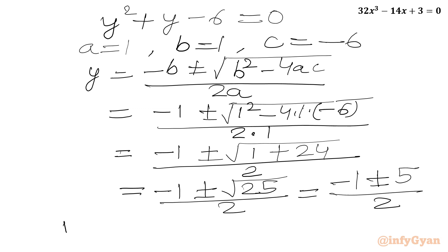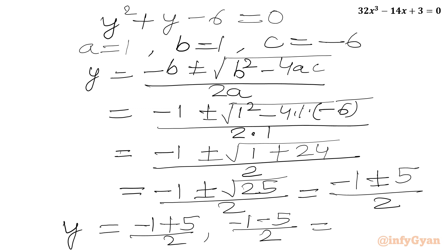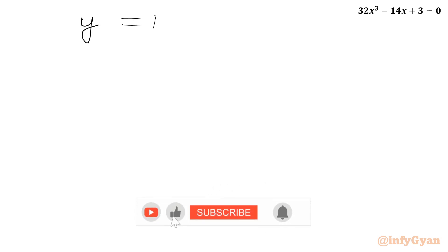Since √25 = 5, we get two values: (-1 + 5)/2 = 4/2 = 2, and (-1 - 5)/2 = -6/2 = -3. So in total, y = 1, y = 2, and y = -3.